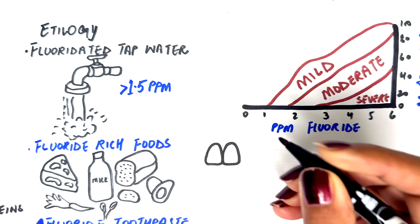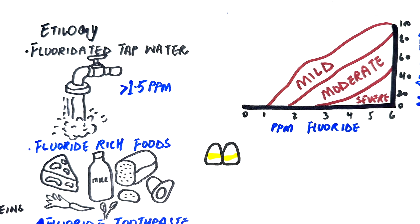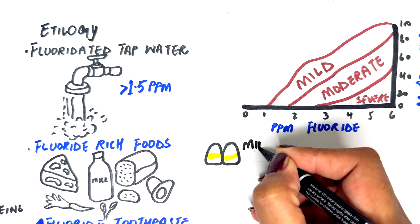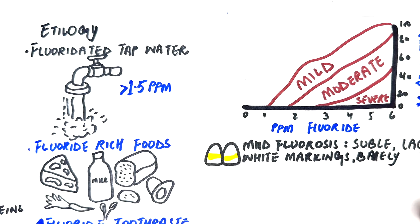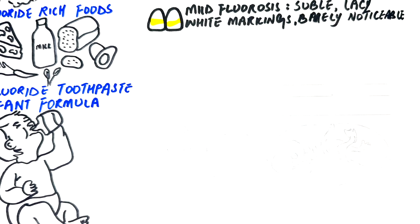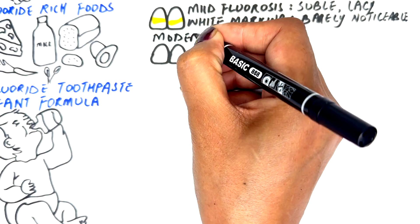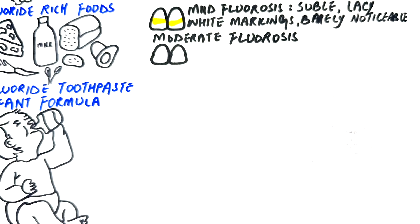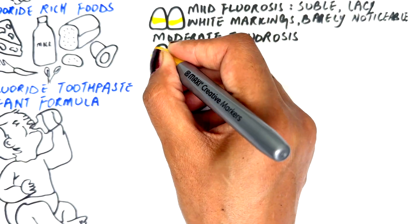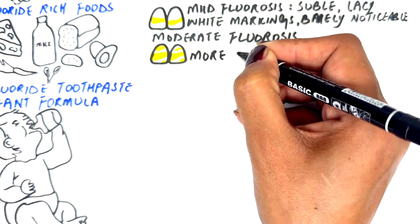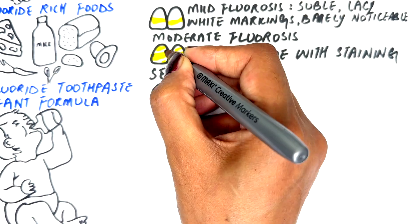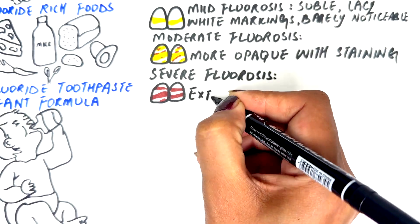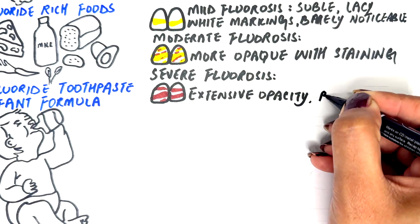Mild cases appear as subtle, lacy white markings that are barely noticeable. Moderate cases appear as more distinct opaque white areas, often accompanied by staining due to increased enamel porosity, which allows pigments from food, beverages, and bacteria to be trapped over time.